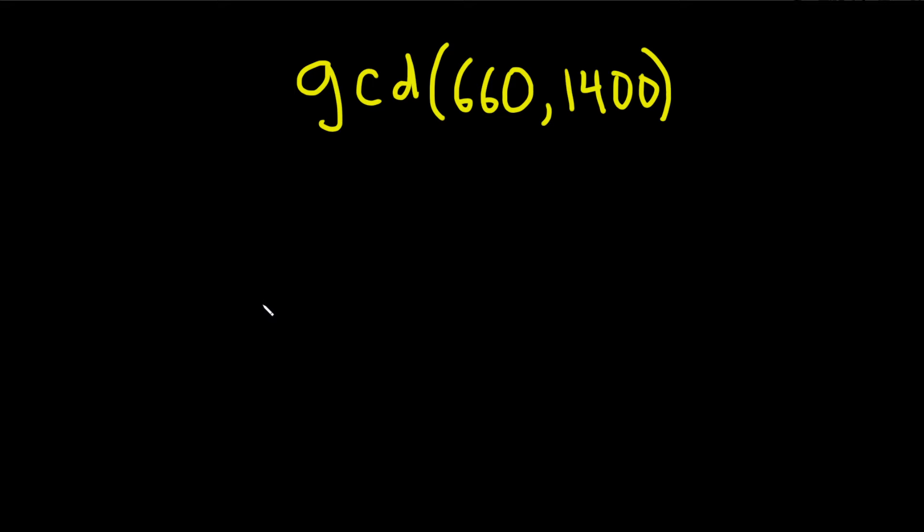Find the greatest common divisor of 660 and 1400. If you have smaller numbers, you can just list all of the divisors and then pick the greatest one that they have in common. But these numbers are pretty big.